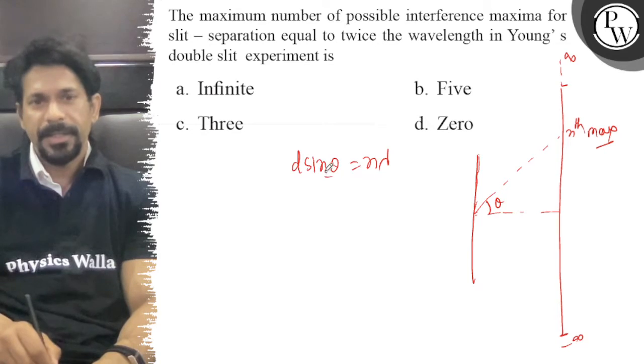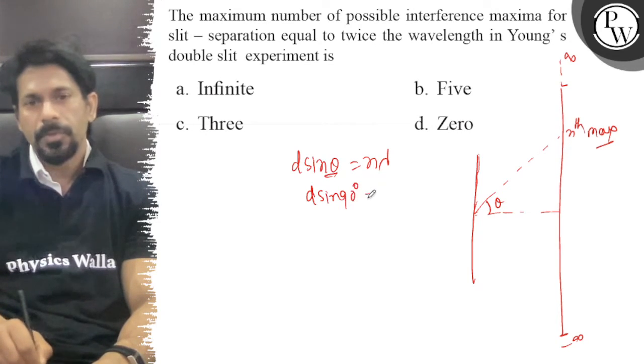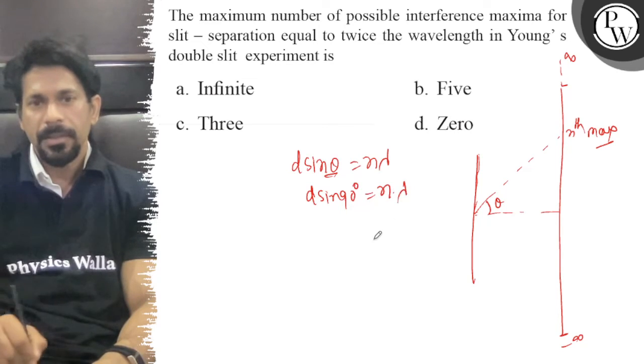The sin theta 90 will come, so d sin θ equals n into lambda, where lambda is the wavelength.